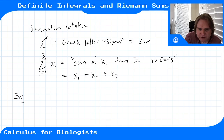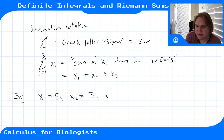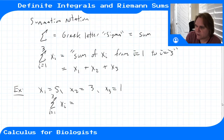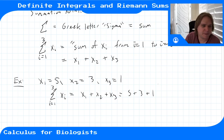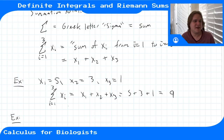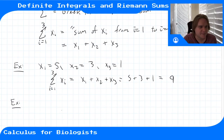Let's say x_1 is 5, x_2 is 3, and x_3 is 1. The sum from i equals 1 to 3 of x_i is x_1 plus x_2 plus x_3, which is 5 plus 3 plus 1, giving us 9. A nice thing about sums is you can do addition of sums and constant products and still get what you expect.